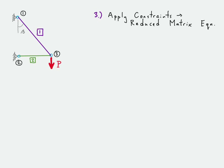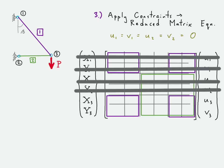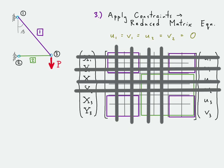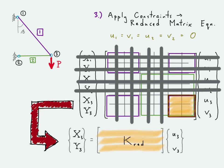Next we apply the constraints to obtain the reduced matrix equation. Nodes one and two are completely pinned, so they cannot translate in x or y. We cross out all rows and columns corresponding to those constrained degrees of freedom. What remains is the reduced stiffness matrix equation — just the region corresponding to the free degrees of freedom, which are DOFs five and six, corresponding to node three, the only unconstrained node.